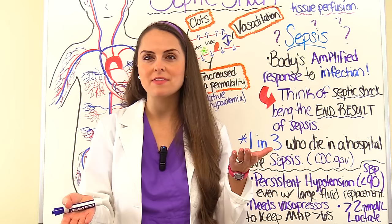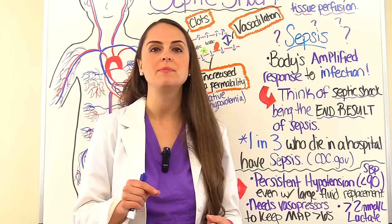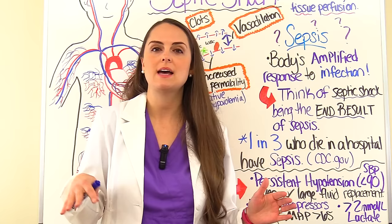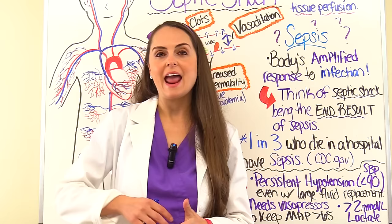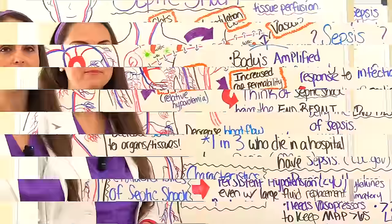Think back to our stages of shock video — when cells are struggling and not receiving enough oxygen, they switch from aerobic metabolism to anaerobic metabolism. Because they don't have oxygen, they metabolize without it, which produces lactic acid. As it accumulates in the blood, your serum lactate will rise, and that tells us we have altered tissue perfusion.